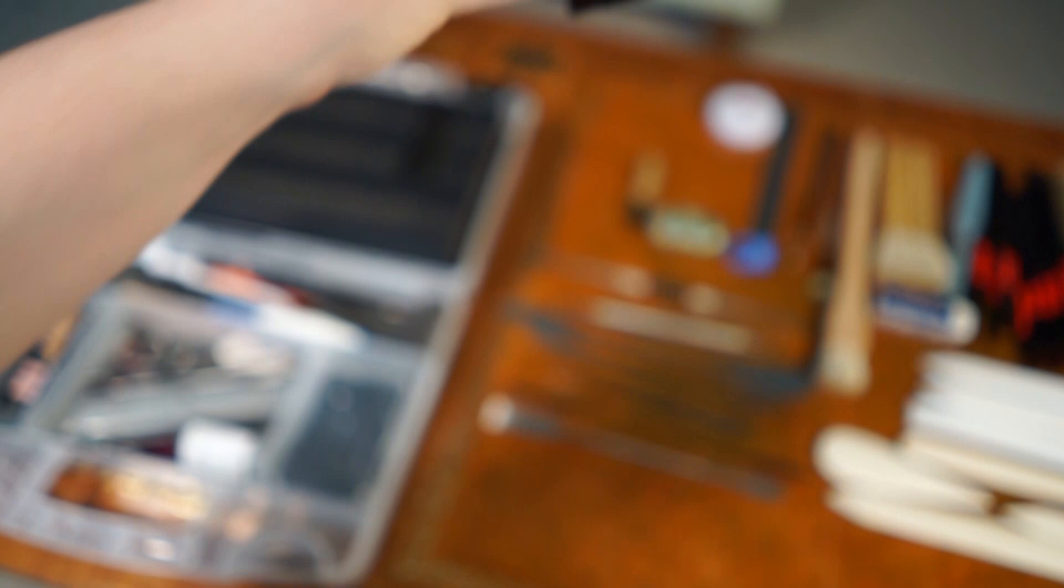This is my phone loop which I clip onto my phone to get some magnification when I'm looking at objects closely. In terms of magnifying tools, I also have my linen tester. This is a little brush holder and this was actually made for me by a fellow intern when I was doing my internship at the Library of Trinity College Dublin, Ireland.